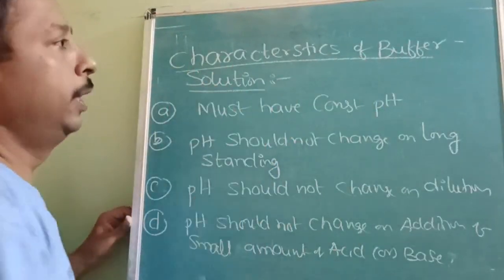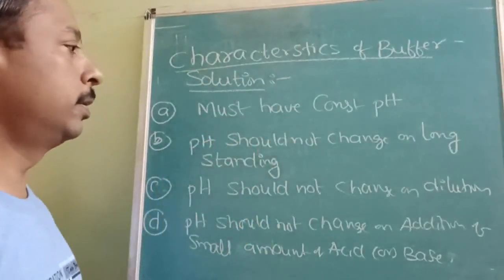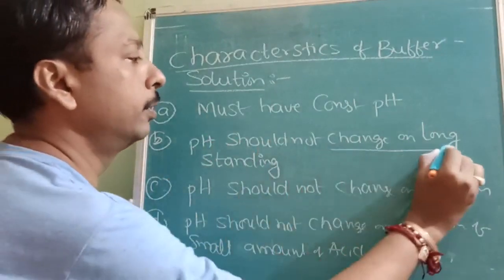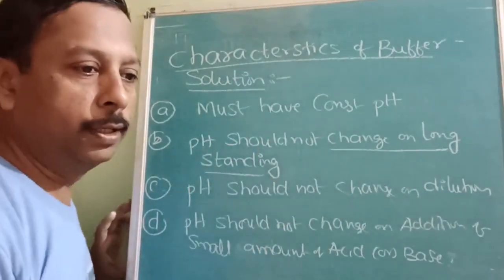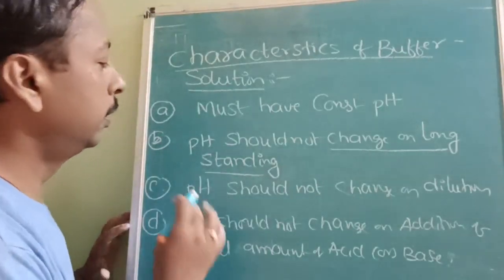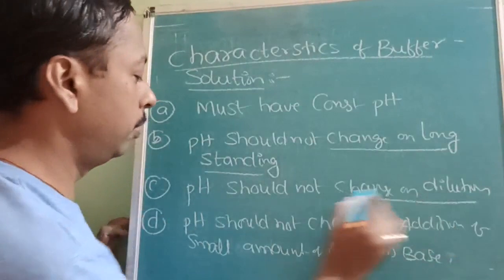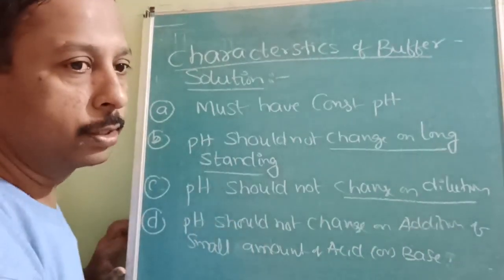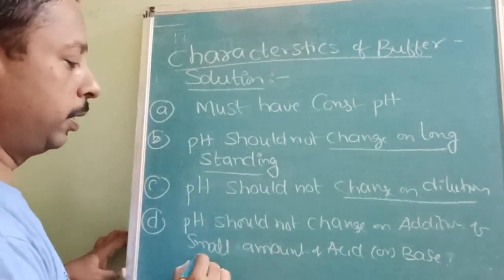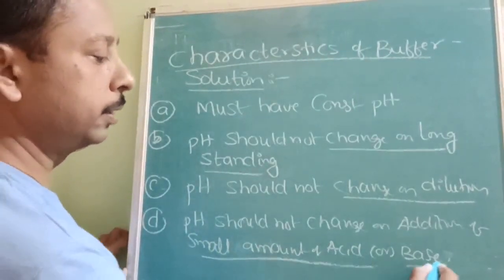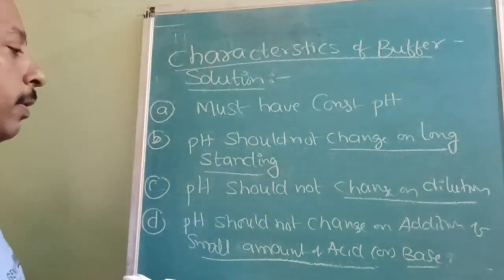These are the characteristics of buffer explained as points. First, they should have constant pH. Second, on long standing — if you keep it stored for a longer time — the pH should not change. Third, pH should not change on dilution or addition of water. Fourth, pH should not change on addition of small amount of acid or base.